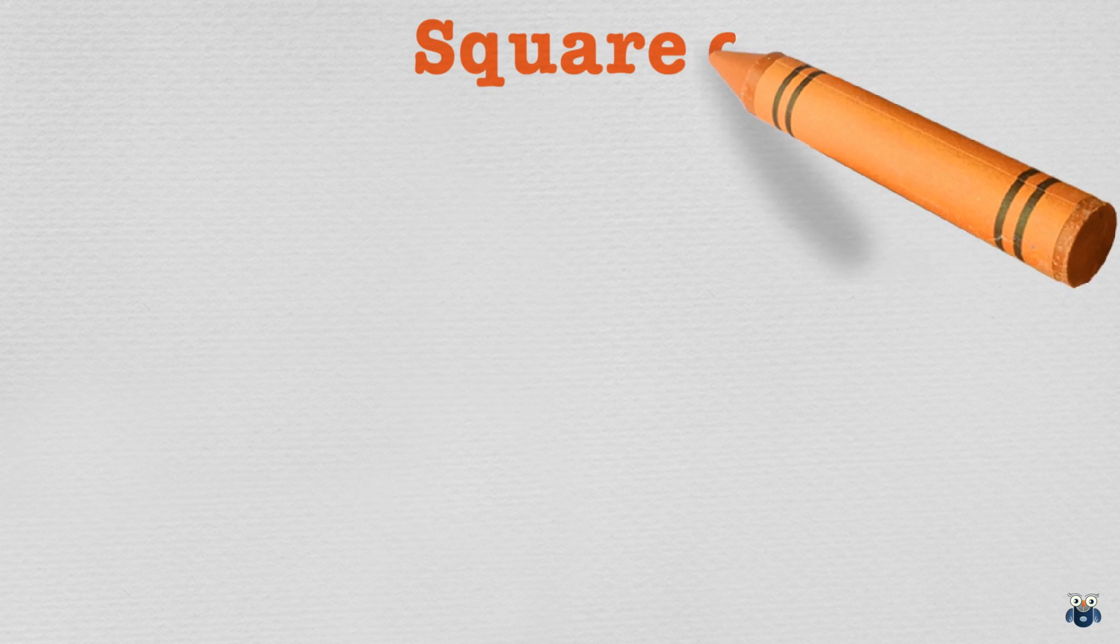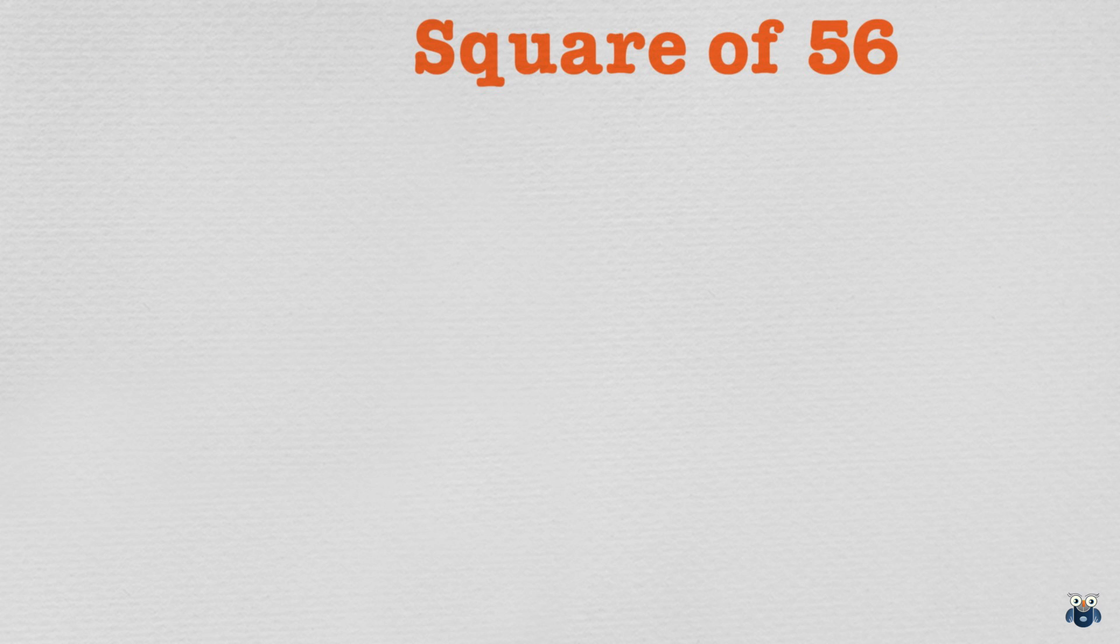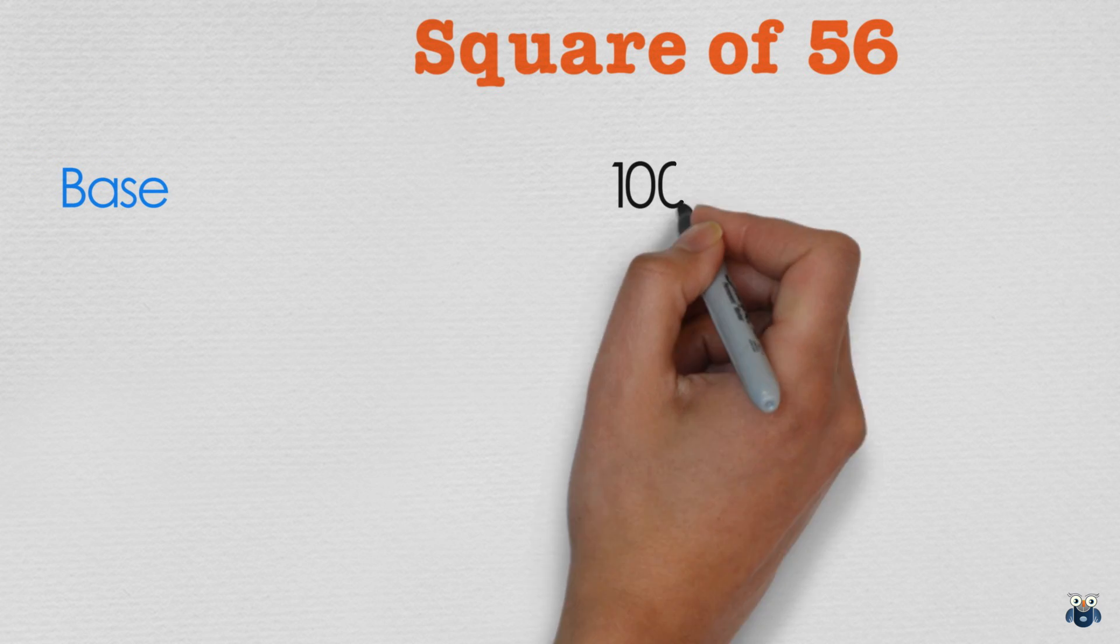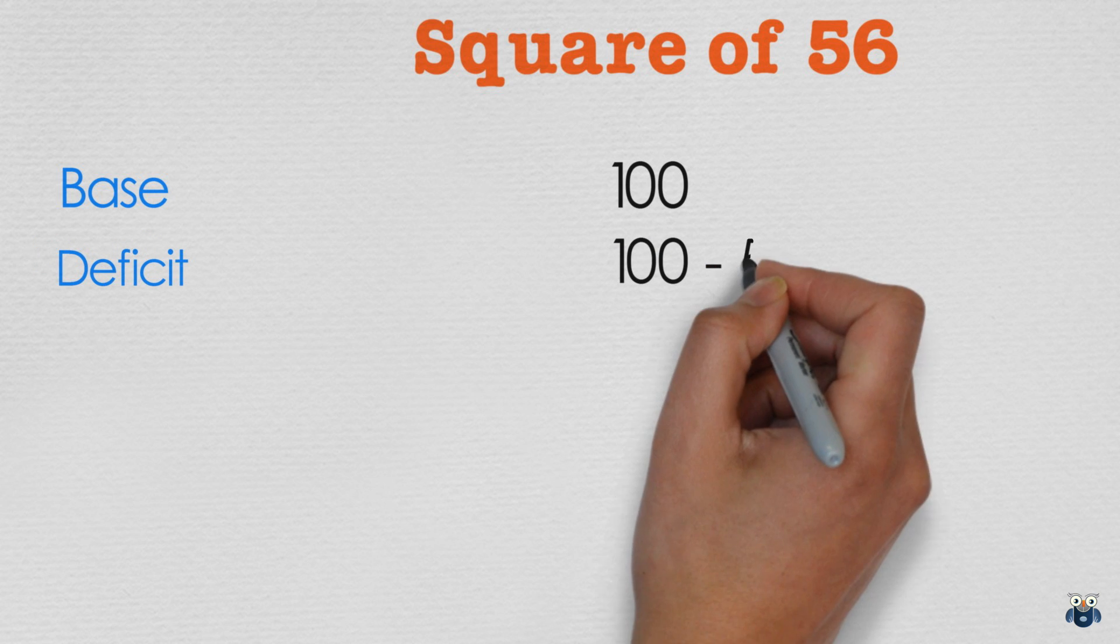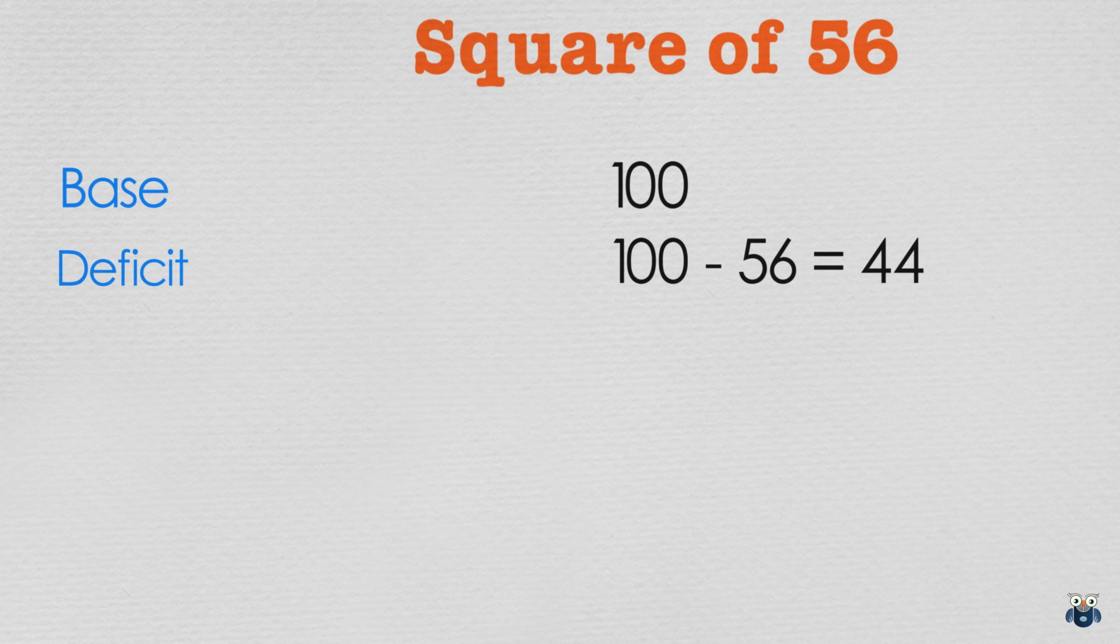What is 56 square? 56 is close to 100 which is our base. The deficit is 100 minus 56 which is 44. As before, we subtract the deficit from our number since it's less than the base.